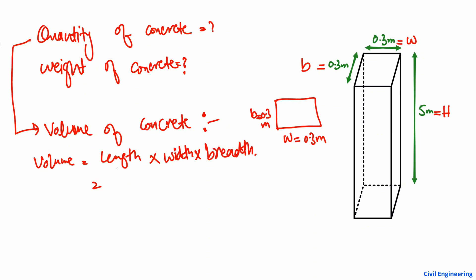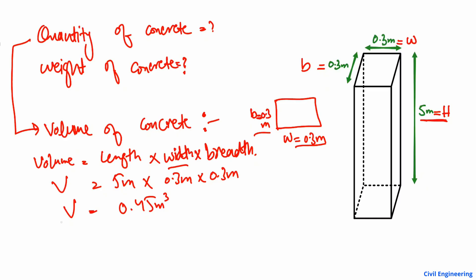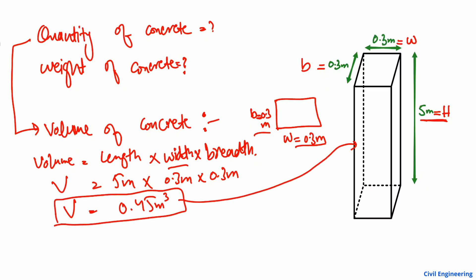The depth of the column is 5 meters, the width is 0.3 meter, and the breadth is also 0.3 meter. By multiplying these three quantities, we get the volume of the concrete for this column: 0.45 cubic meters. So 0.45 cubic meters of concrete is present in this column.